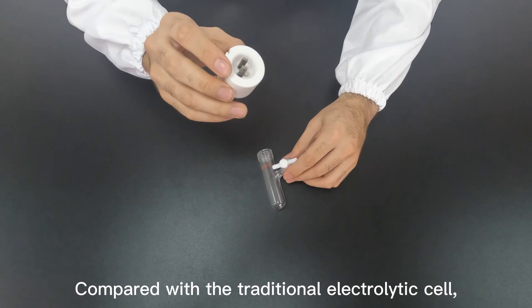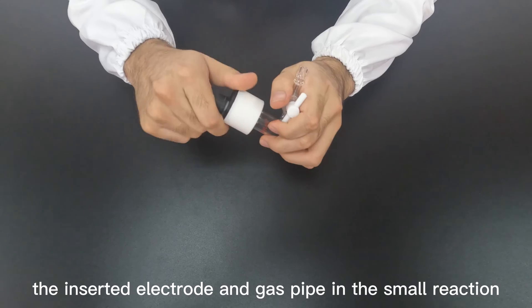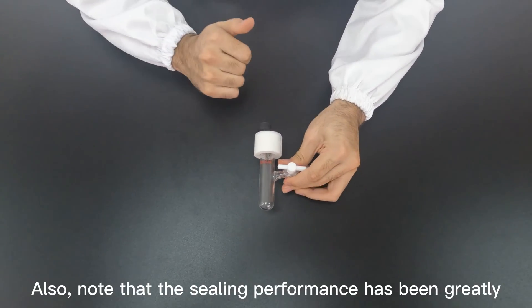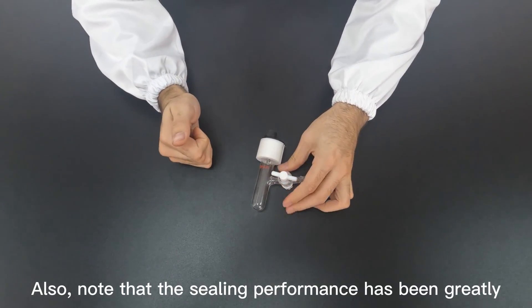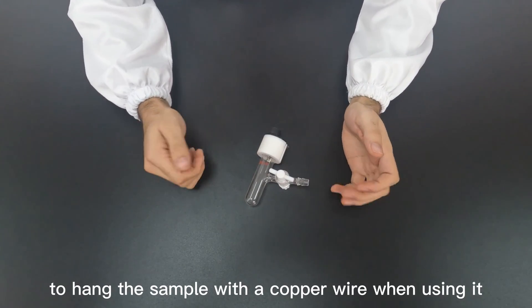Compared with a traditional electrolytic cell, the one that we designed has the inserted electrode and gas pipe in the small reaction. The sealing performance has been greatly enhanced and it's super convenient to hang the sample with a copper wire when using it.